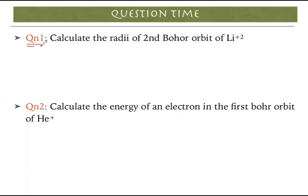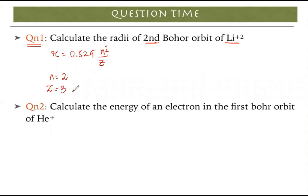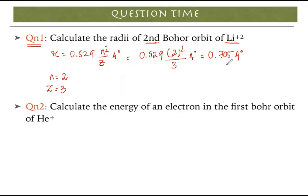Question 1: Calculate the radius of the second Bohr orbit of Li²⁺. Using r = 0.529 n²/z Å: n = 2 (second orbit), z = 3 (atomic number of lithium — ignore the charge). So r = 0.529 × 4 / 3 = 0.705 ångströms.